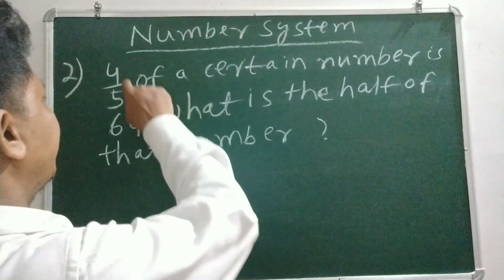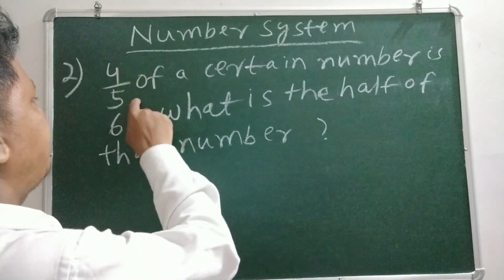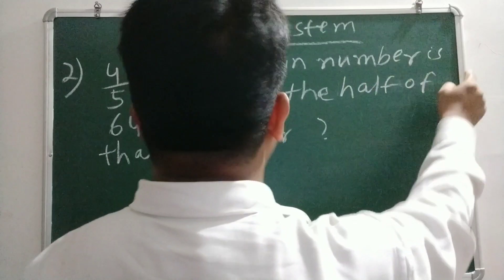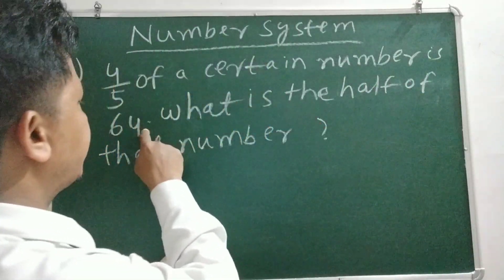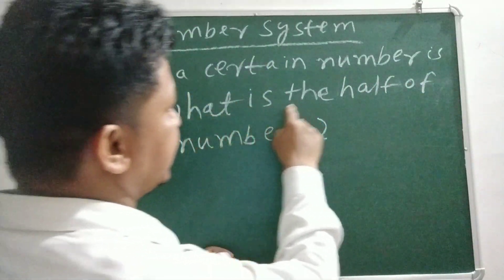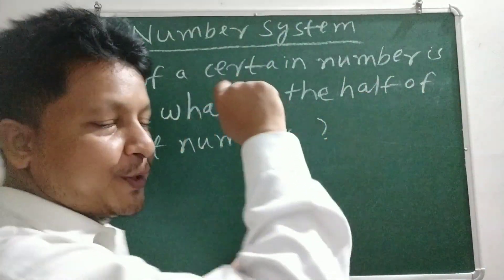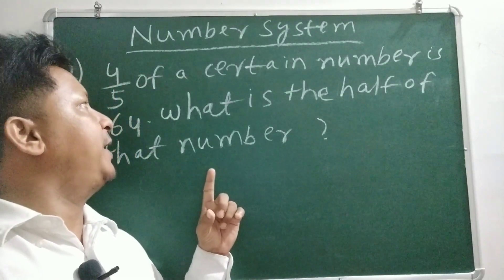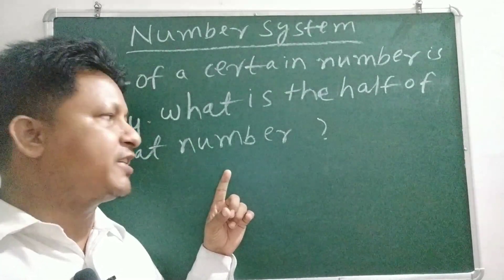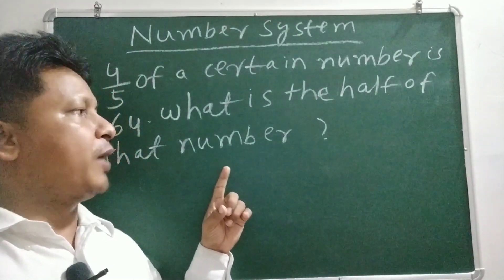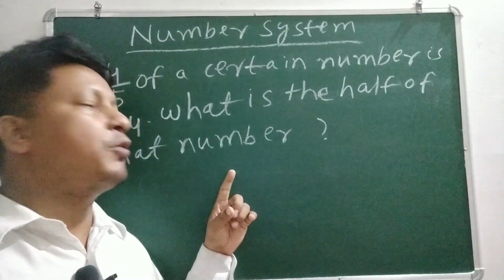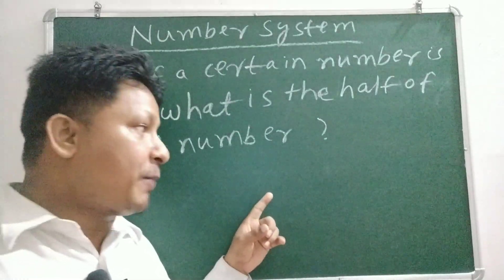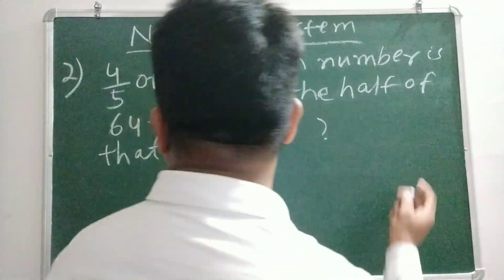4 by 5 of a certain number is 64. What is the half of that number? Let me show you.